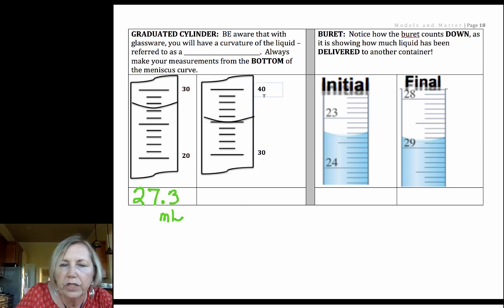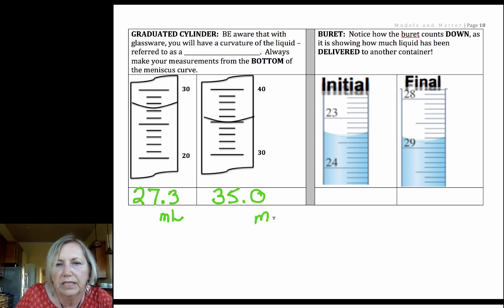This next one, it's greater than 30 but less than 40, so I've got a 3 in the tens place. 1, 2, 3, 4. It's really close to that 5. And I'll be honest, I think it's right on that line. You may not think so. That's why it's called an uncertain digit. So I'm going to call that 35.0 milliliters.